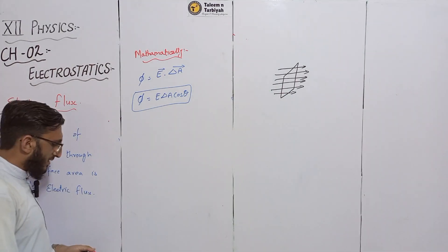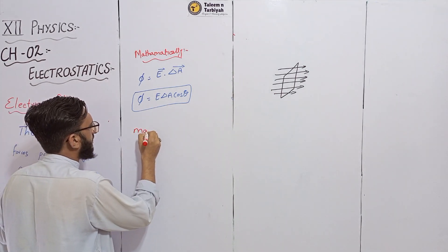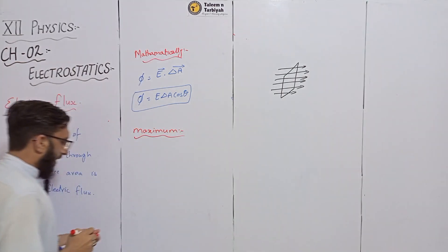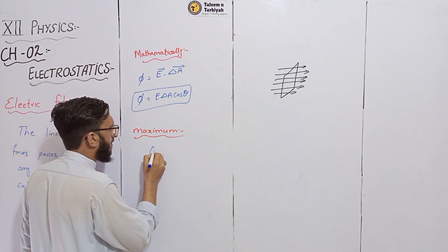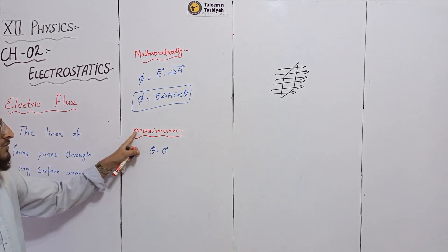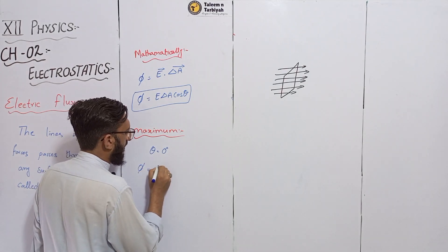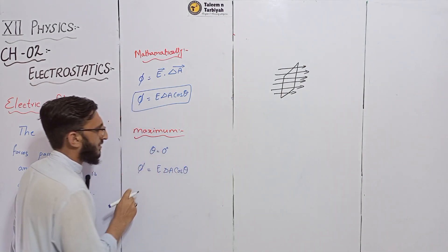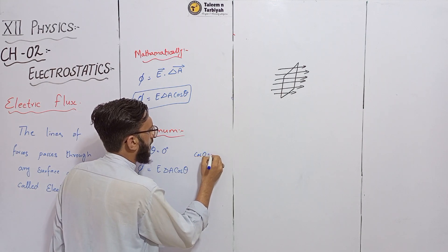Now we have electric flux maximum and minimum. Electric flux is maximum when theta is equal to zero. If theta is zero, then the formula gives us E delta A cos zero, and cos zero is equal to one, so the electric flux is maximum.